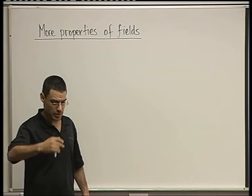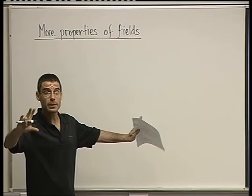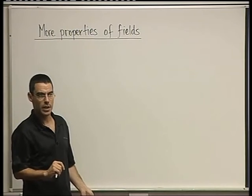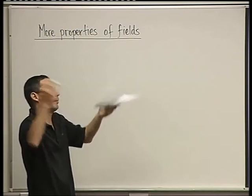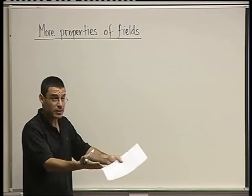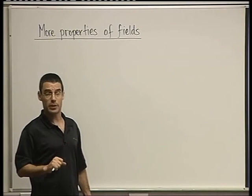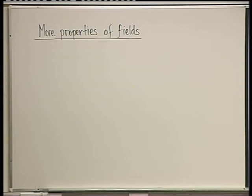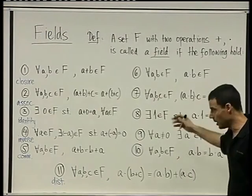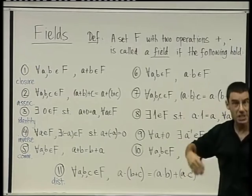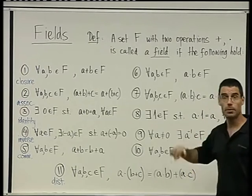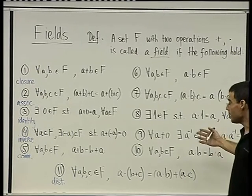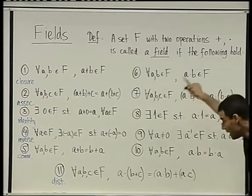Mathematics is constructed as: you define something — you can define whatever you want — but usually the definition is meaningful if you have examples, if you show that what you defined is not just something in your mind, but there really are things that are examples of that definition. Like a field: a field is a very complicated definition. We saw that the real numbers are a field, the complex numbers are a field, the rational numbers are a field.